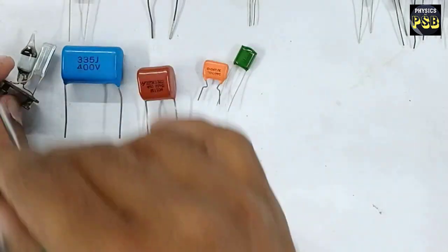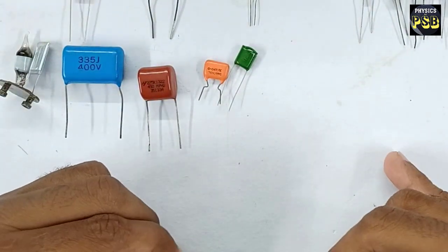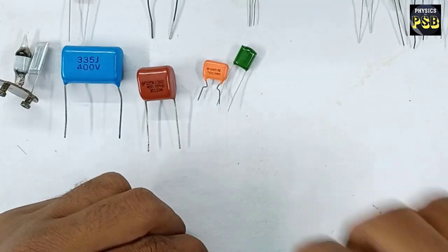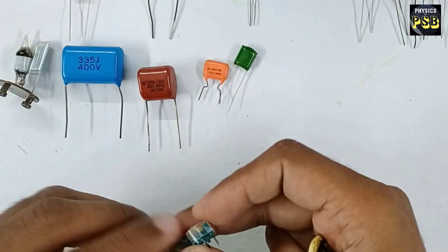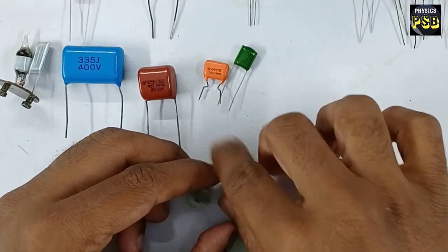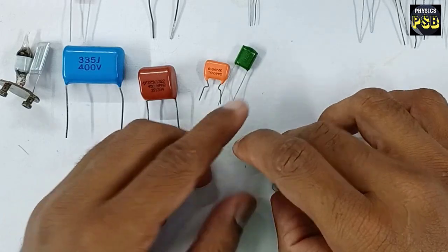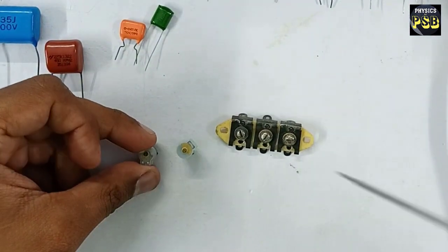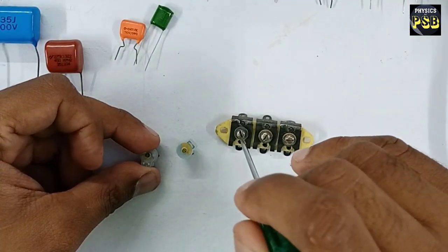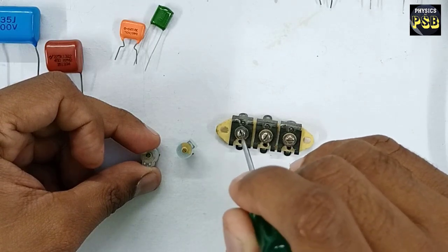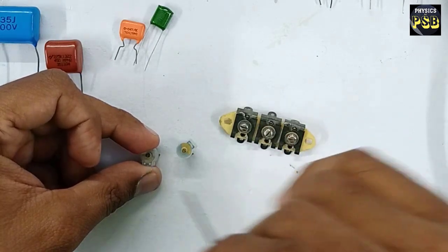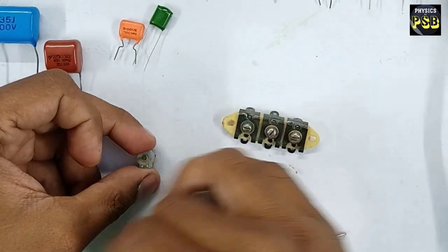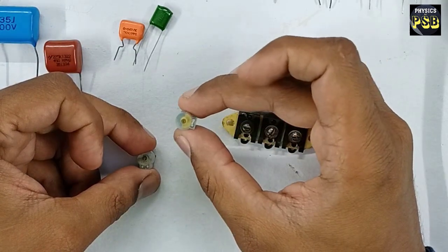All the capacitors we have discussed so far are fixed capacitors. Apart from this, variable capacitors are also available. What you see now are called variable capacitors. These three are variable capacitors. They have a small screw in them. By rotating these screws, the capacitance of these capacitors can be varied. This kind of variable capacitor is known as a trimmer capacitor.